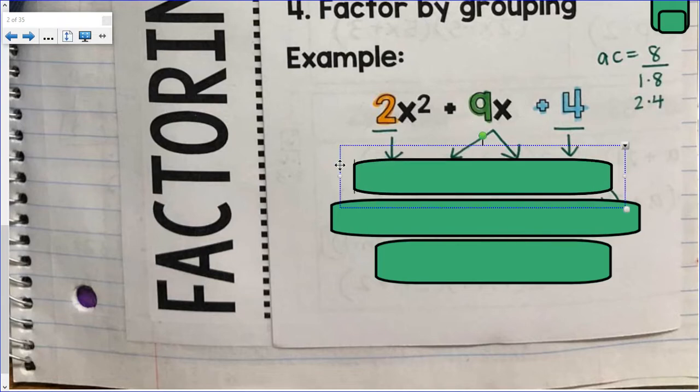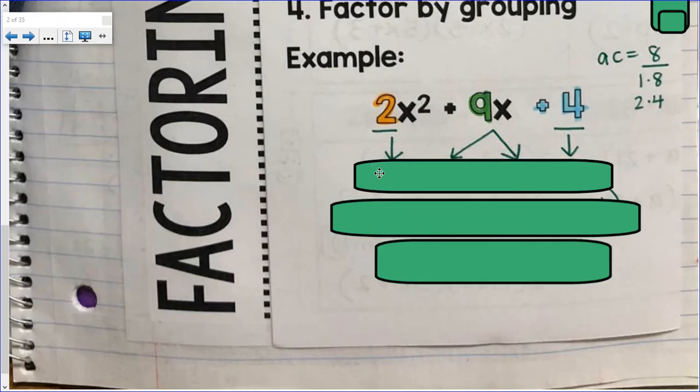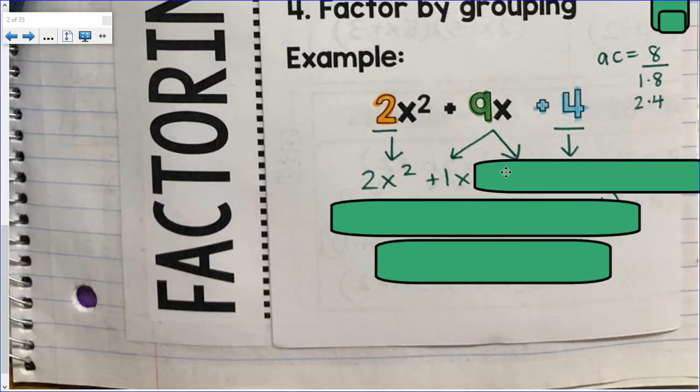So here is the deal. Now, I continue to bring down 2x². I rewrite 9x as a positive 1x plus positive 8x. Now that 1 and 8 came from this factor pair here that we chose. 2 times 4 is 8.